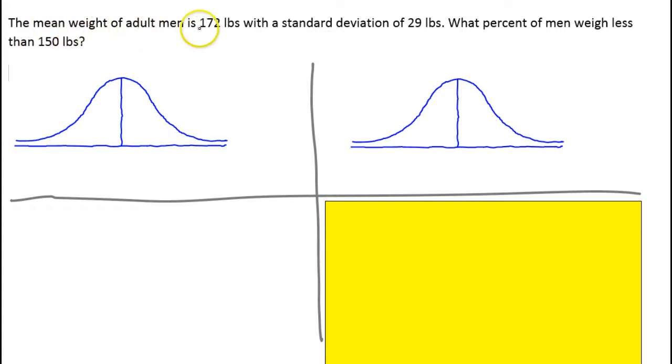The mean weight of adult men is 172 pounds with a standard deviation of 29 pounds. What percent of men weigh less than 150 pounds?